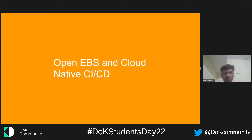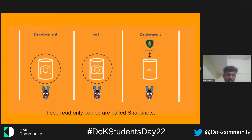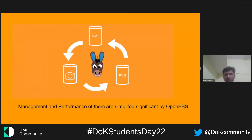Now I'll talk a little bit about OpenEBS and the cloud-native CI/CD pipeline. The key part of stateful development, testing, and deployment pipelines is where you take read-only copies of live data for development and testing. These copies are called snapshots — as you can see, the rounded shape in the diagram represents a snapshot. The management and performance of snapshots are drastically simplified with OpenEBS.